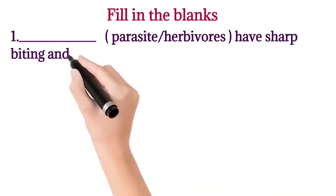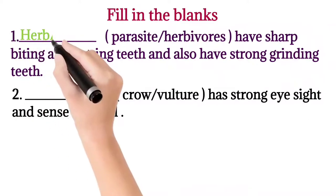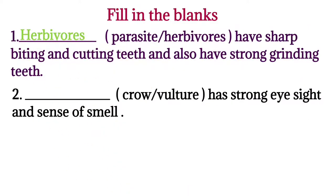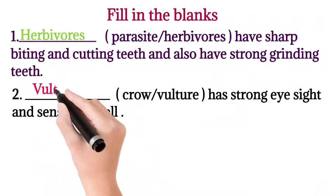Question one: do parasites or herbivores have sharp biting and cutting teeth and also strong grinding teeth? Correct answer: herbivores. Plants need to be chewed well because of the presence of cellulose in them. Some herbivore animals chew their cud.